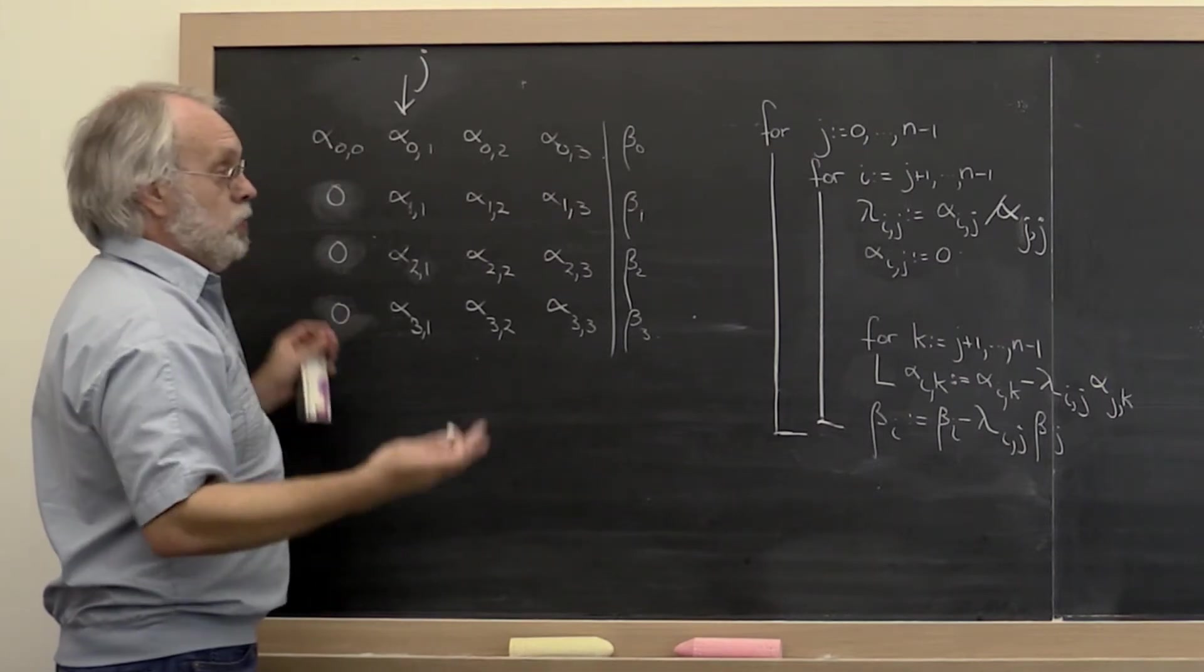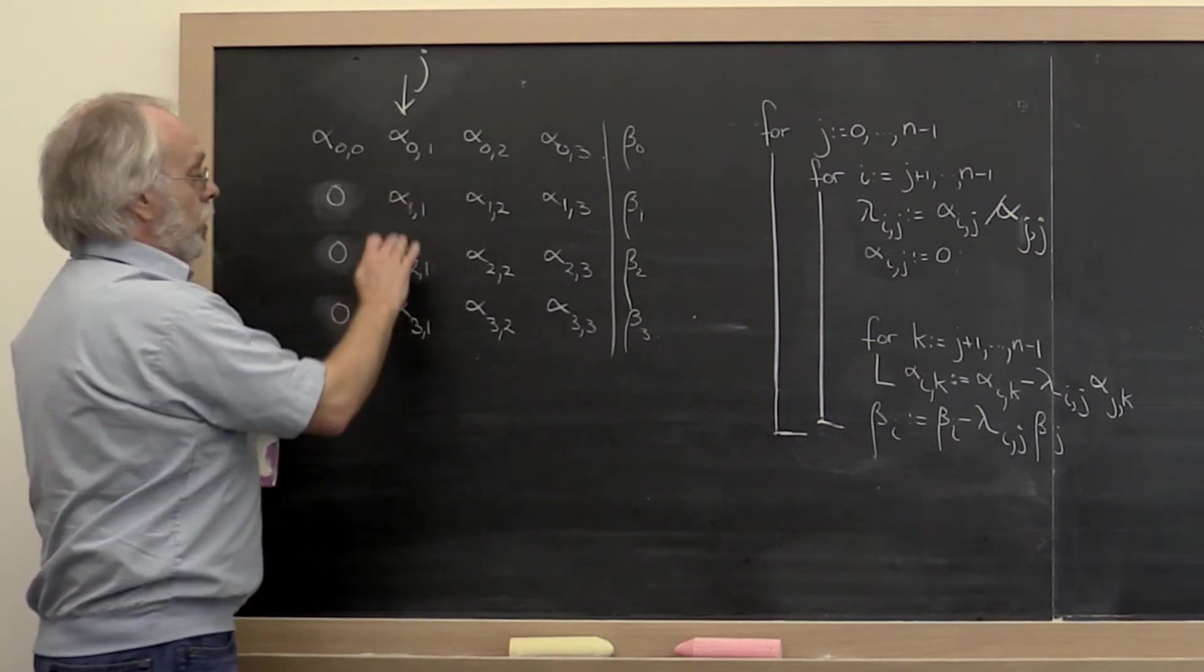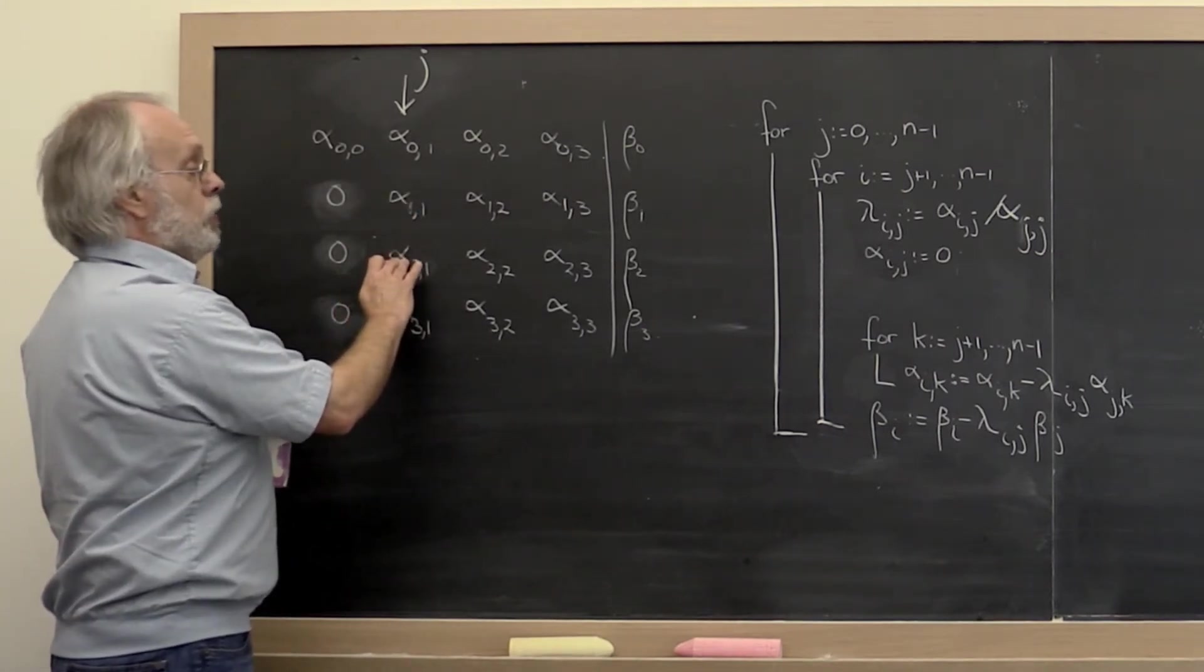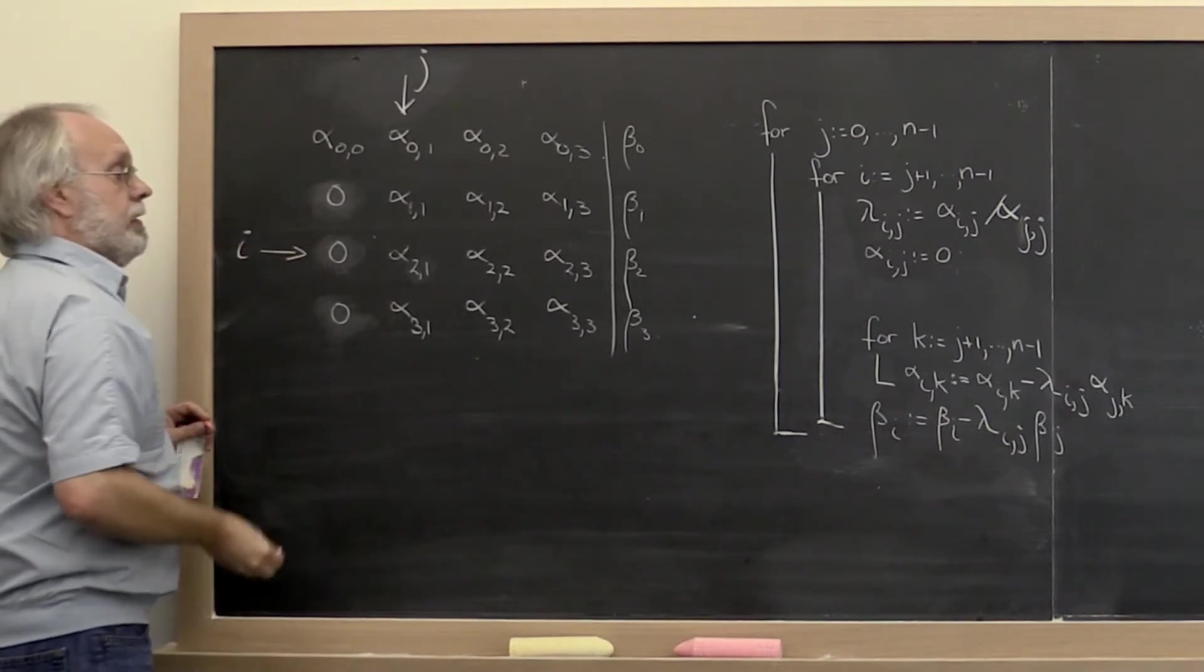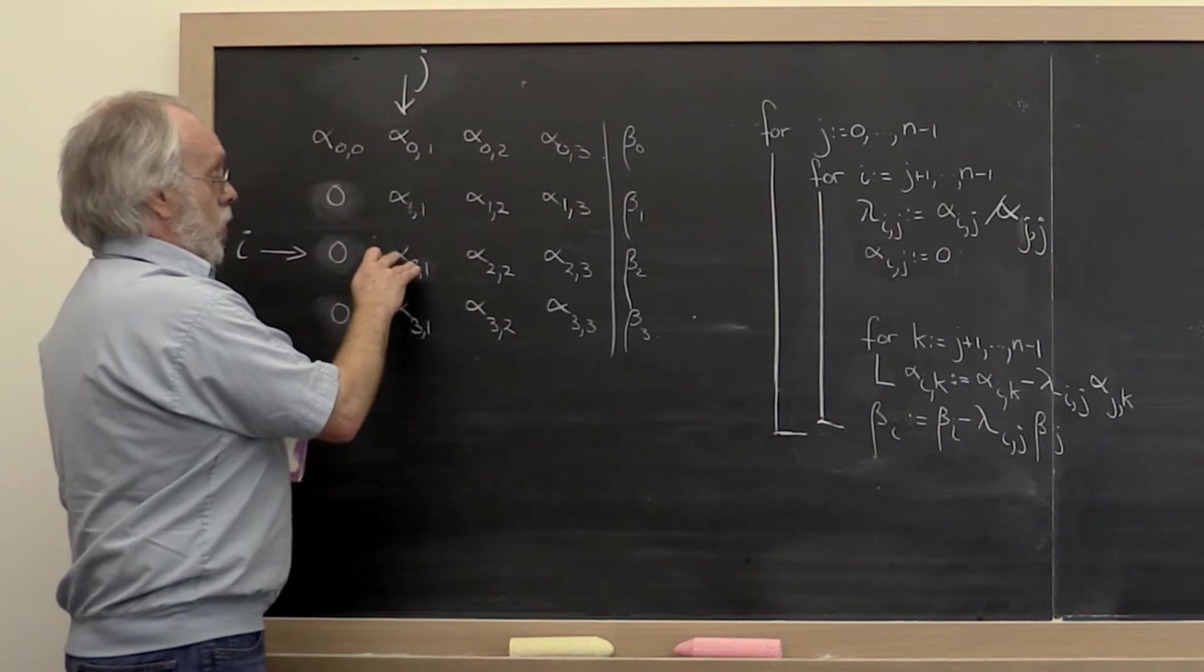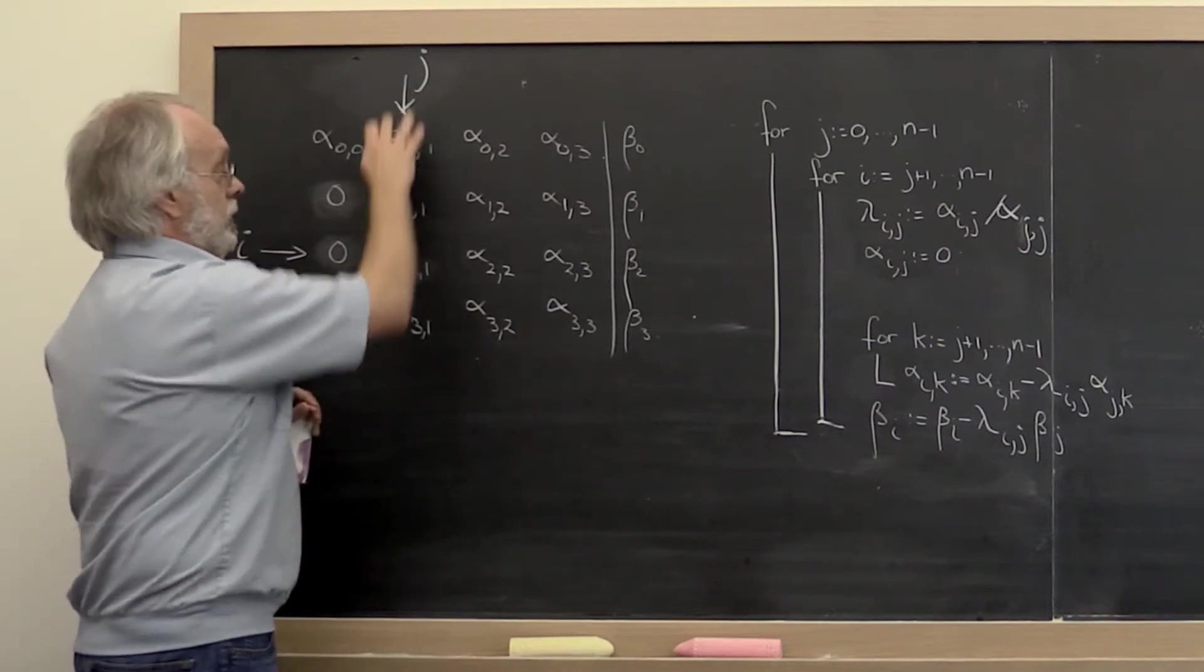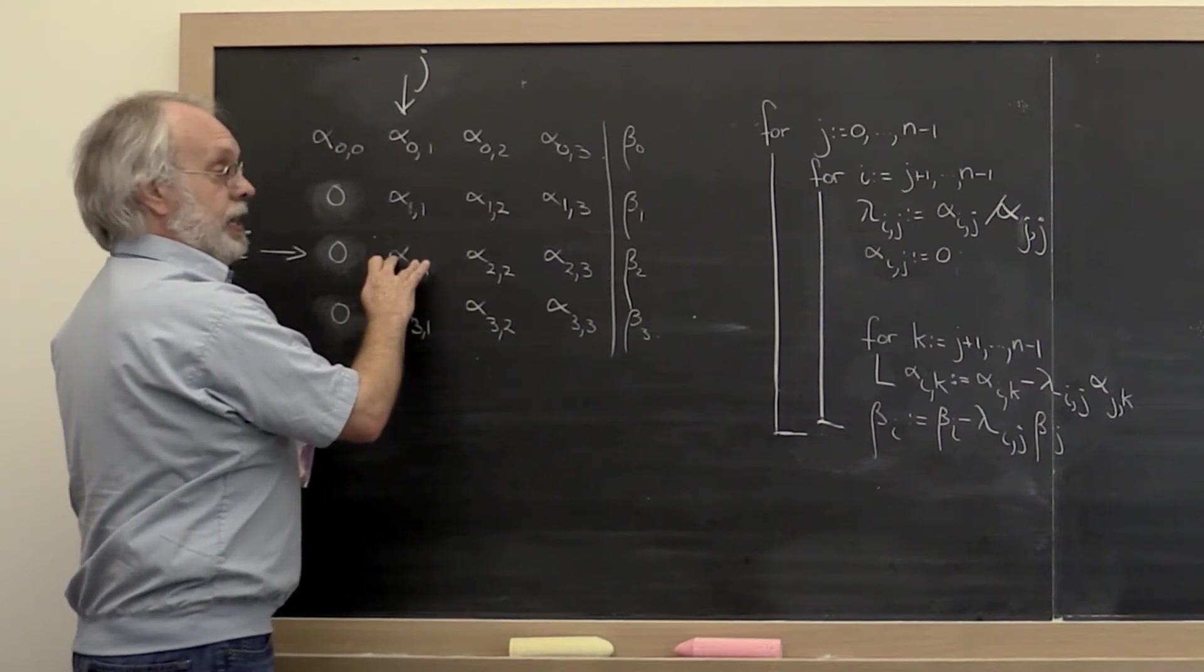What do we do in a typical step of Gaussian elimination? We go find the row that we're currently working on, and we may want to index that with I. For that row we take the current element in the current column, column J, and we compute the multiplier.